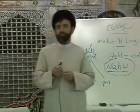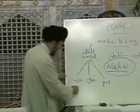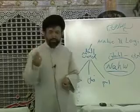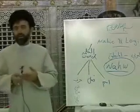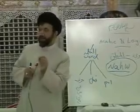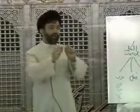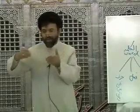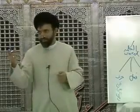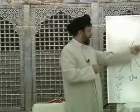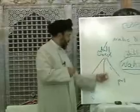And finally there is harf — particle. For example: fi, min, ila, ala. There are tens of haruf — we call them haruf — and each one has its own structure and meaning. Even more than this, the position of a harf in a sentence differs. For example, if you use 'ala' in a sentence, you have different kinds of positions for 'ala' in Arabic language. So we learn all these things under the general title kalima or word, which is divided into three parts.